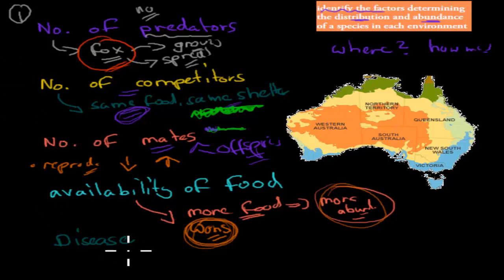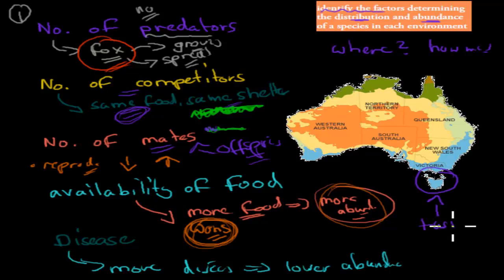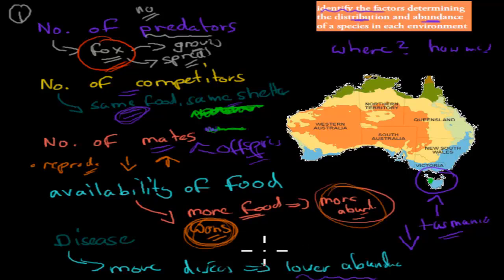The higher the amount of disease, the lower the numbers — the lower the abundance. An example is Tasmania, where the Tasmanian devil has a cancer epidemic. Many Tasmanian devils are infected with this cancer, which is severely affecting their numbers. Abundance is going down because they're dying off from the disease. The ones that survive tend to be in areas located away from the disease, so those pockets will be higher populated — that's how disease affects both abundance and distribution.